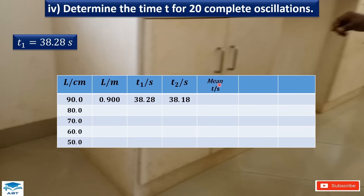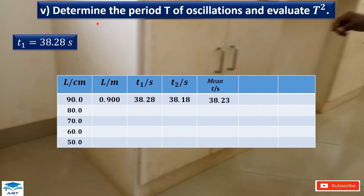Find the mean of the two times: (38.28 + 38.18) ÷ 2 = 38.23 seconds. Then determine the period of oscillation. The period is the time for one complete oscillation, so divide the mean time by 20: 38.23 ÷ 20 = 1.91 seconds. Square the period: 1.91² = 3.65 seconds squared.